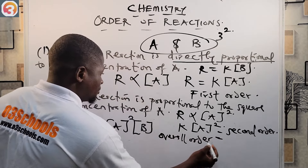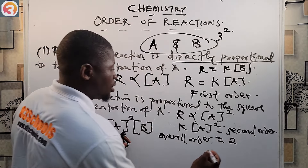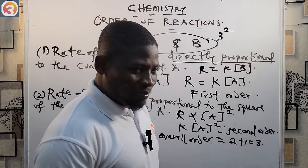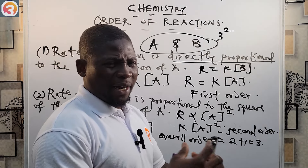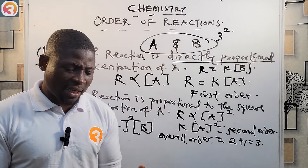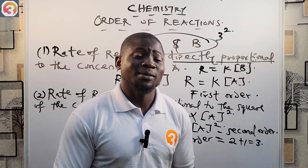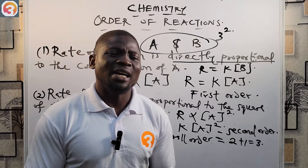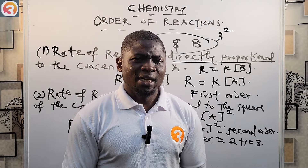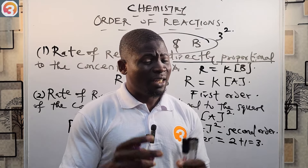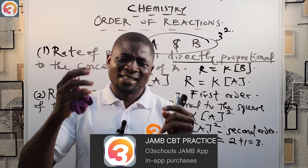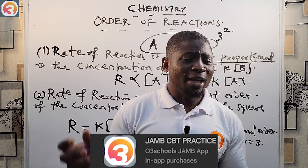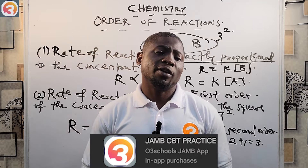Combining both results into one overall rate equation gives: R = k[A]²[B]. We use only one rate constant k for the whole equation. The overall order of this reaction is 2 (for A) plus 1 (for B), which equals 3. Now let's look at a more detailed experiment involving three substances A, B, and C forming product D.